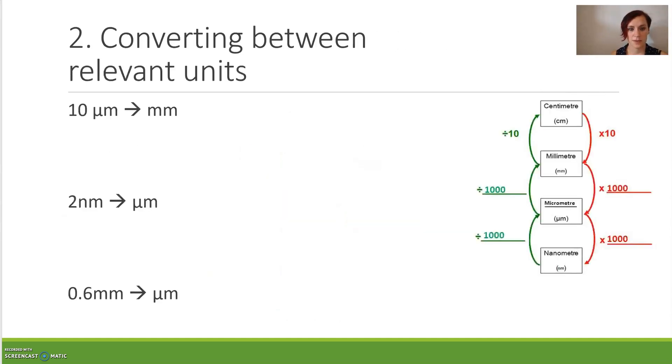Let's have a practice. We've got 10 micrometers to millimeters. Here's our scale over to the right. We know that we are going from a smaller measurement to a larger measurement, so we are going to do a division. We know that there are 1000 micrometers in the millimeter measurement, so we're going to be dividing by 1000. So it will be 10 divided by 1000, which will give us a total of 0.01.